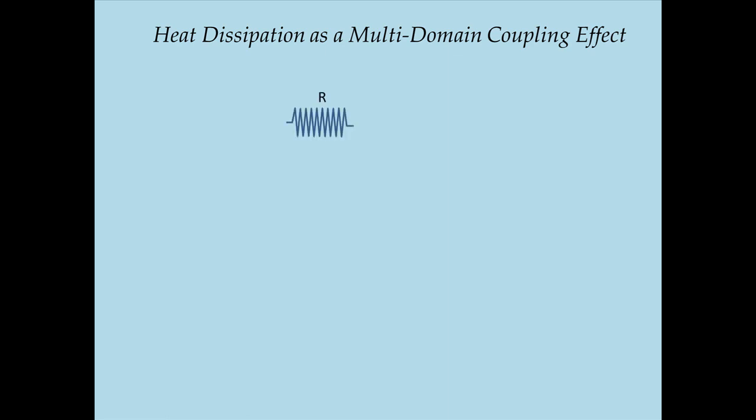Think of an electrical resistor of resistance R. If a current I(t) flows through this resistor, it generates I²R heat losses. When you use the expression 'I²R losses,' you're saying that energy is being lost from the electrical world to the thermal world. When you are an electrical engineer modeling only electrical systems, you think of I²R as a loss. But once you become a dynamic systems engineer, these I²R effects are not losses anymore — they are coupling effects that allow you to build a coupling between different domains.